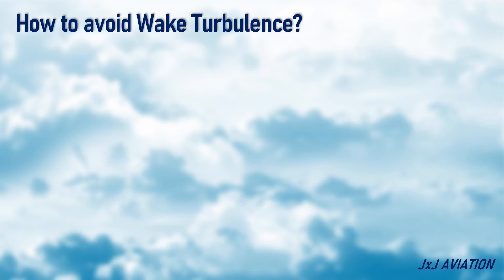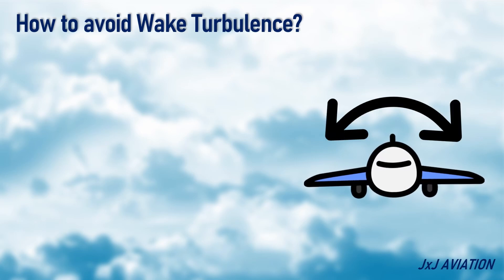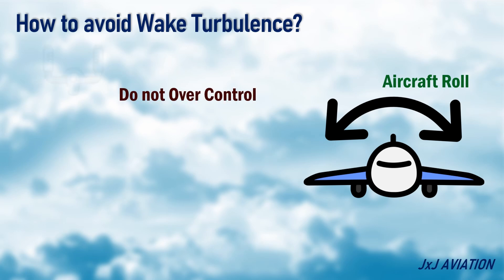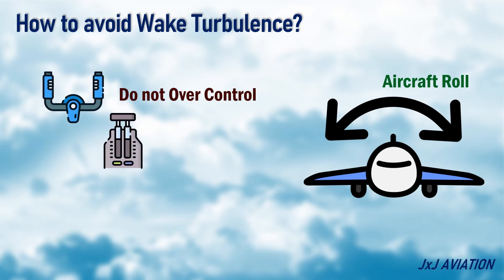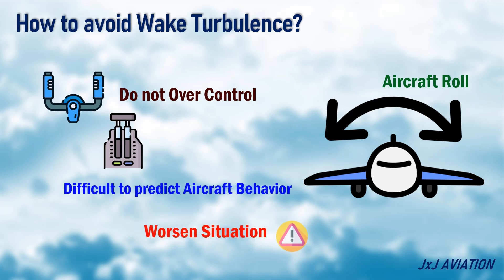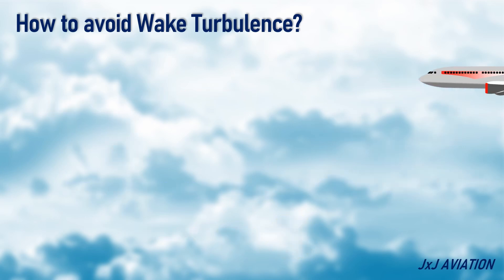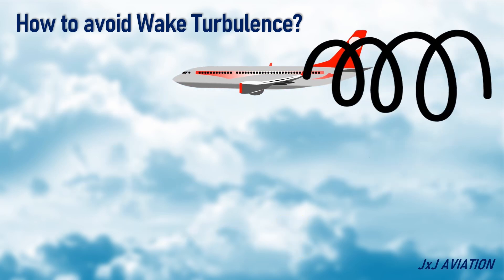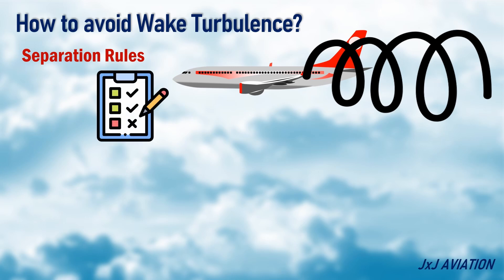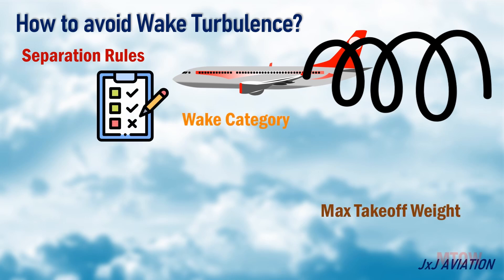How to avoid wake turbulence: When an aircraft encounters wake turbulence, it can cause the aircraft to roll towards one side and then roll in the opposite direction. On some aircraft, it is recommended to not over-control the aircraft, since it is difficult to predict the aircraft behavior and trying to control the aircraft can worsen the situation. To avoid wake turbulence, there are separation rules which are to be followed. The separation rules depend on the wake category, which is based on the maximum takeoff weight.